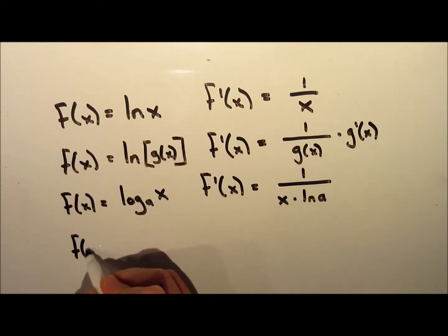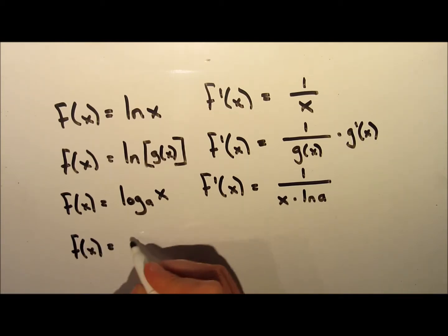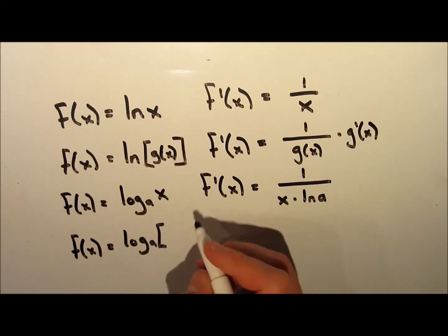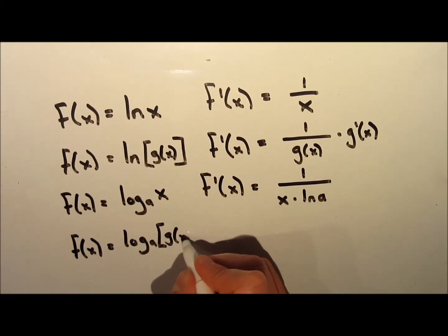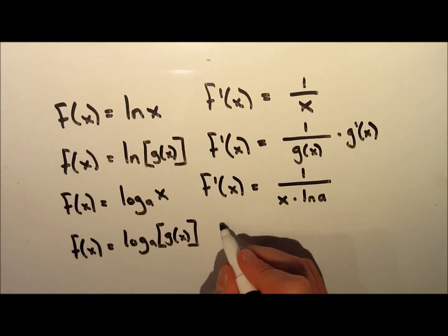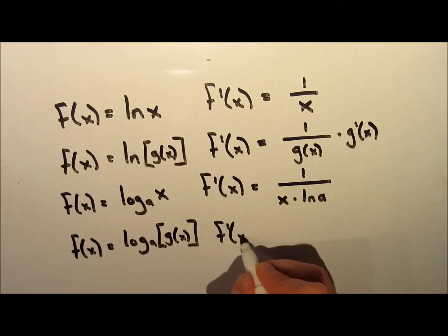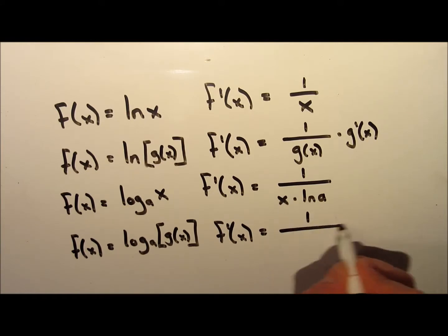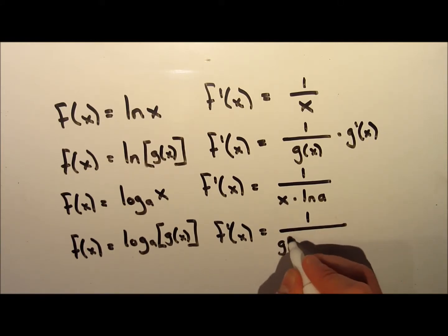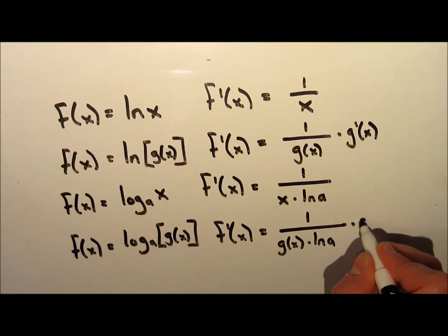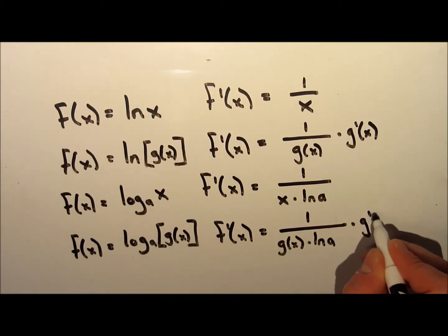Our last template function is f(x) equals log base a of g(x), where g(x) is just a more complicated part in brackets. The derivative of this is f prime of x equals 1 over g(x) multiplied by ln of a, and all of this is multiplied by g prime of x.